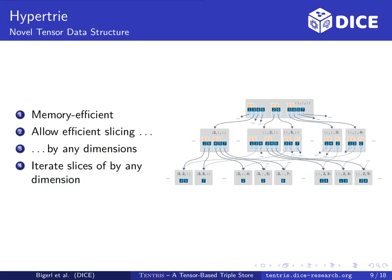For Tentris we needed a tensor data structure with certain features. First, the tensor representation must be memory efficient when storing sparse boolean tensors. Second, it must allow efficient slicing. Third, this slicing must be possible by any dimension and on any tensor which results from such a slicing. And fourth, the data structure must allow to iterate all non-zero slices by any dimension.